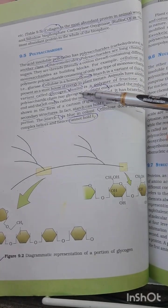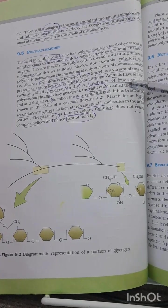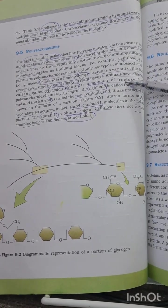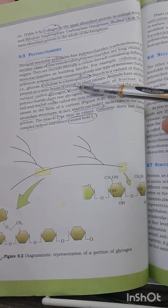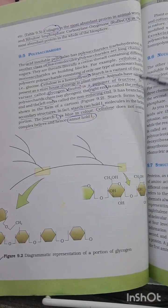Now inulin is a polymer of fructose. This question has been asked multiple times in NEET as well as AIIMS examinations. You have to remember that inulin is a polymer of fructose in a polysaccharide sense.